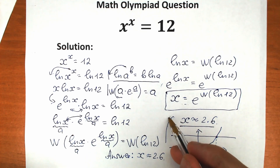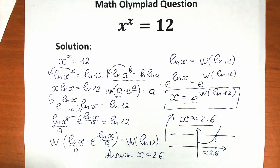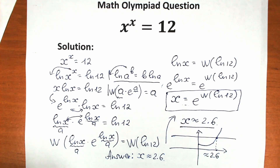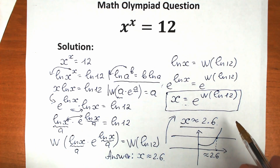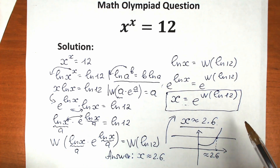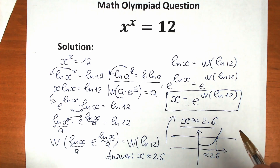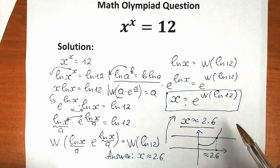So our full answer is x = e^(W(ln(12))) ≈ 2.6. Definitely don't feel bad if you got this wrong. I have many other videos if you need help. If this video was helpful, please like and subscribe — thank you for your support, and see you in the next video.